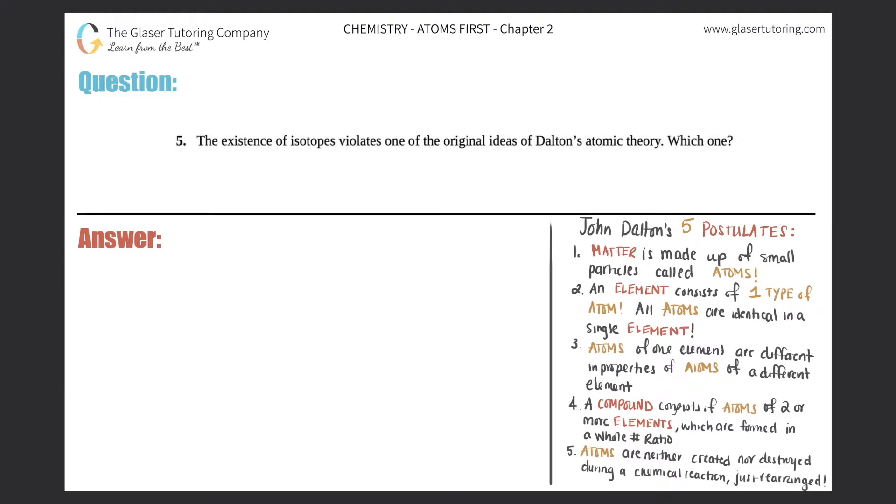Number five: The existence of isotopes violates one of the original ideas of Dalton's atomic theory. Which one? Okay, so first things first, I put John Dalton's five postulates for his atomic theory all down below here. So this is T-H-E-O-R-Y. There's five specific postulates, we just got to figure out which one is violated in this example.